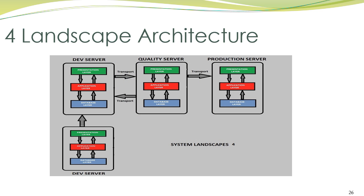The second type is the four landscape architecture, which consists of four servers. In this scenario, we have two development servers. The first server acts as a test and trial server where only trials are made. After this, code is taken to the first development server and the same process continues. There is no possibility of any code flowing backwards from production to quality.